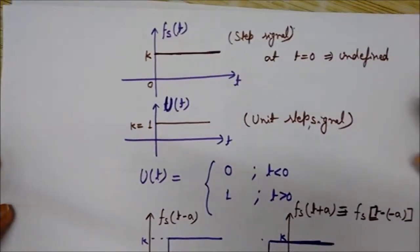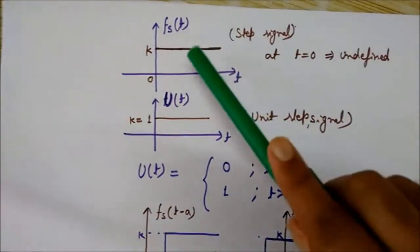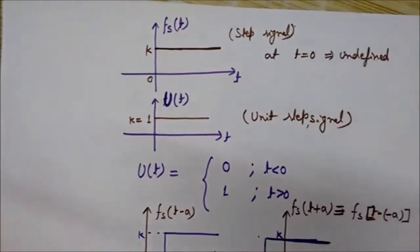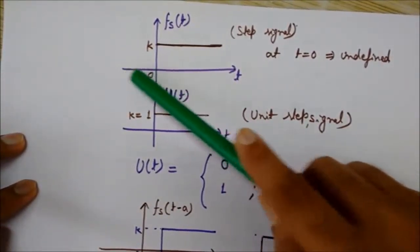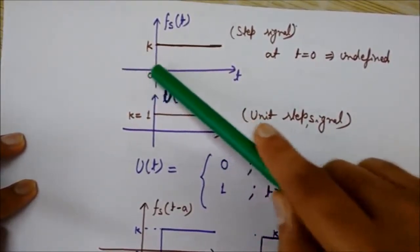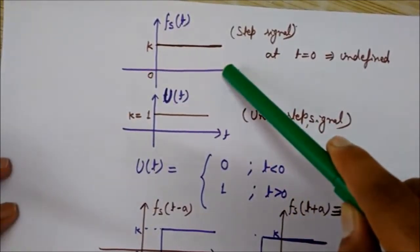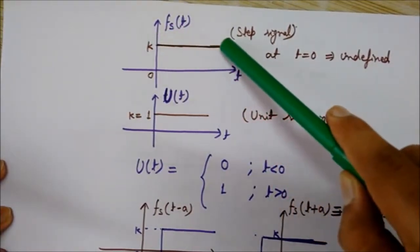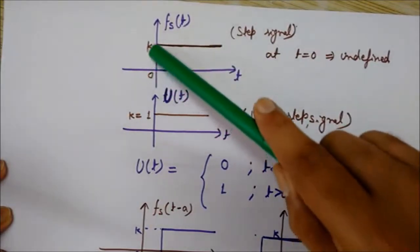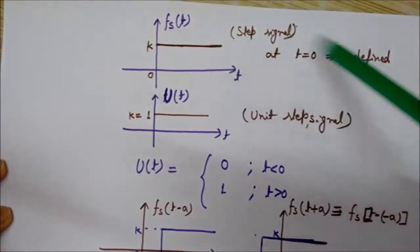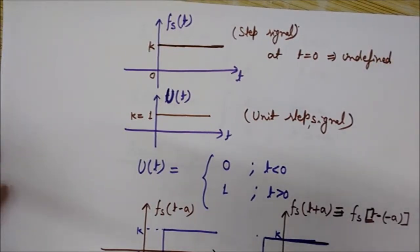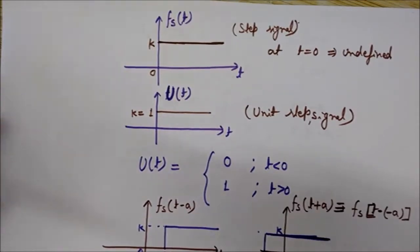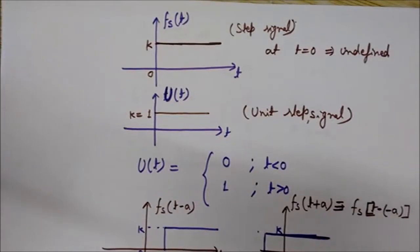Here I have drawn how a step signal looks. As you can see, the value of the step signal is zero for all values of time less than zero — on the negative time axis it doesn't exist. But for positive values of time, t greater than zero, the value is a constant K. Since its shape is like a step, it is called a step signal. One thing to keep in mind: at t equals zero it is undefined, but it is defined at all other values of t.